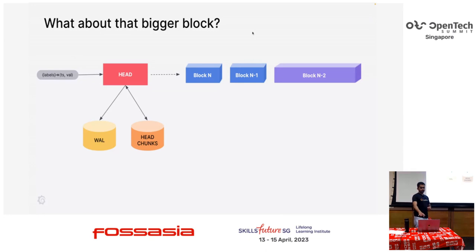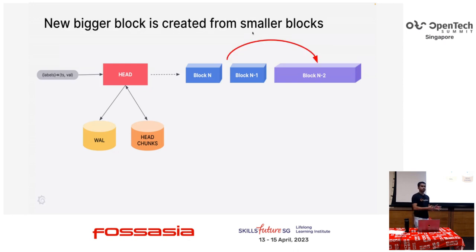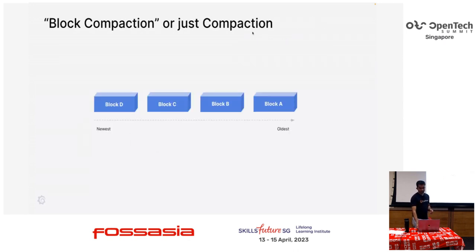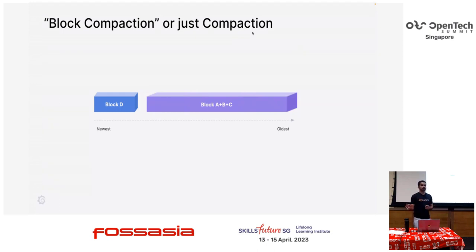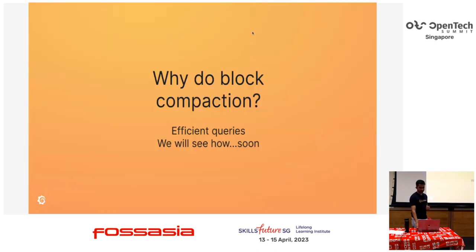What about the bigger block? If you notice in the diagram, I have the n-minus-2 block as a large block — it's created from the smaller blocks we just created. Imagine you have four blocks A, B, C, and D; based on some logic, we choose three blocks at a time and just merge them to create a bigger block. Every block has its own index, and we'll look into the index soon. Block compaction is for efficient queries — it also reduces disk space usage because the index is not repeated.